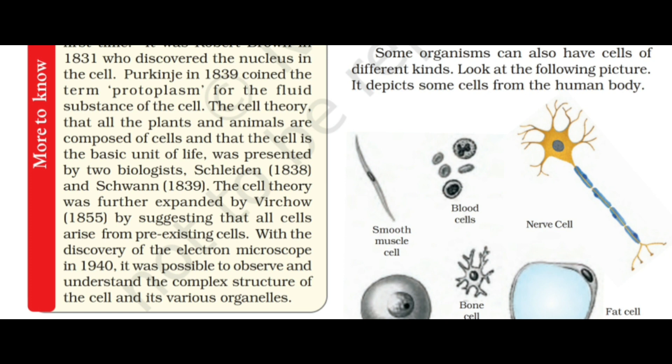The cell theory — that all plants and animals are composed of cells and that the cell is the basic unit of life — was presented by two biologists, Schleiden and Schwann. These two biologists proposed the cell theory in 1838 and 1839.